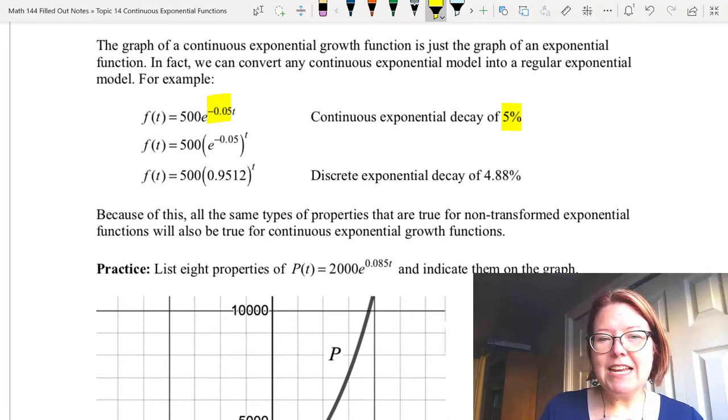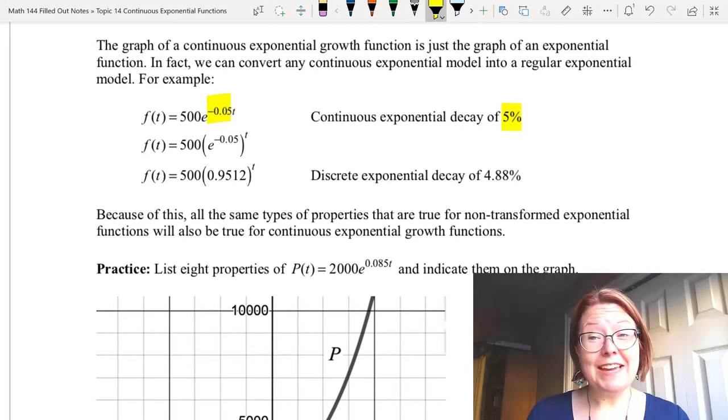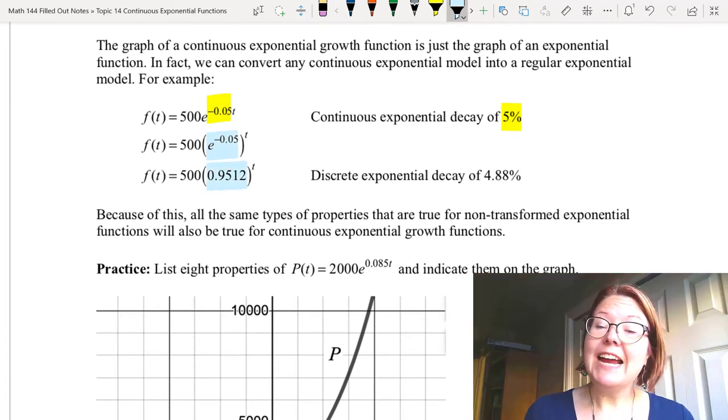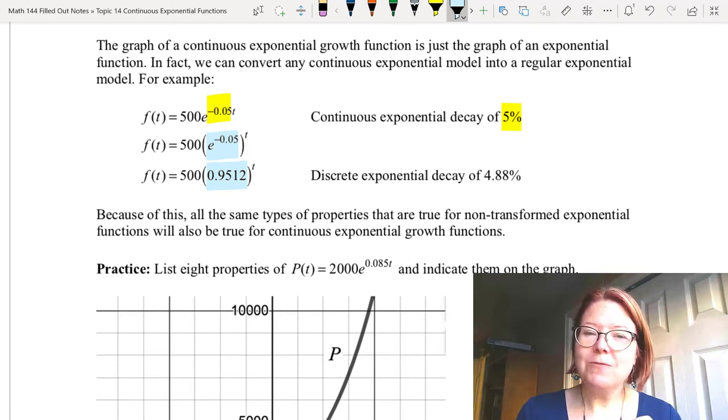Well the nice thing about this is that e to the negative 0.05 that's the number we can calculate on our calculator. So if we do e to the negative 0.05 in desmos we get 0.9512. I'm rounding to four decimal places.